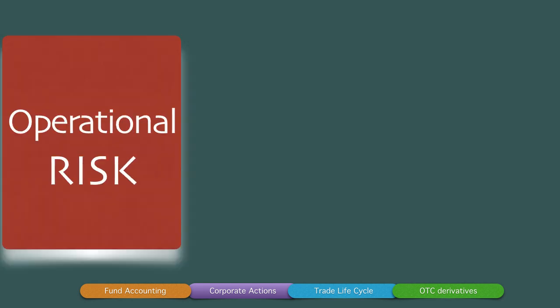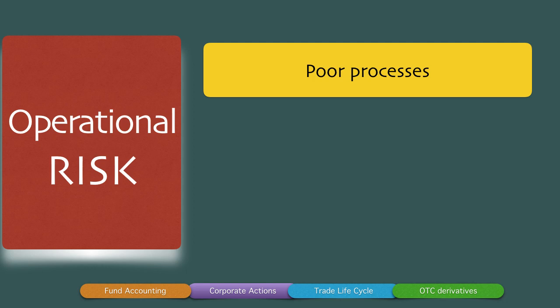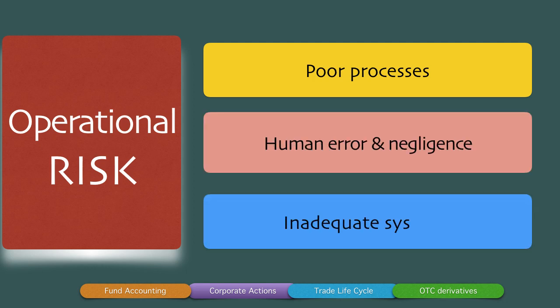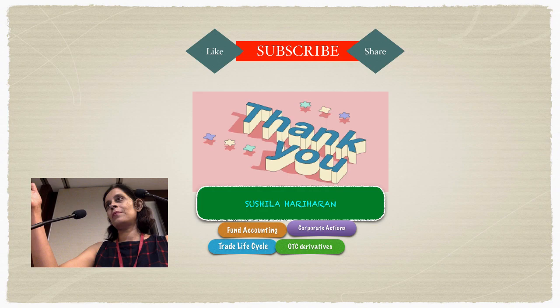Finally, operational risk is the risk that poor processes, human errors and negligence, and inadequate systems cause the bank to suffer a loss — either because of loss of data, a payment erroneously sent to a wrong party, or fraud conducted by employees themselves. For all of this, there must be robust systems in place and continuous audit of the bank and its employees, so that errors are easily detected and rectified as quickly as possible. Thank you so much for listening. Have a great day.